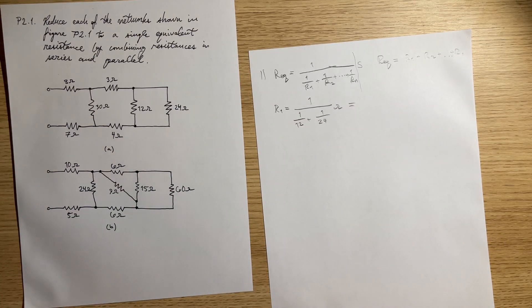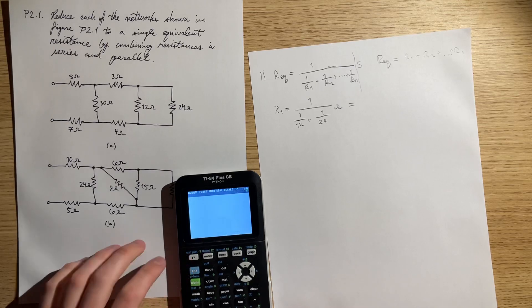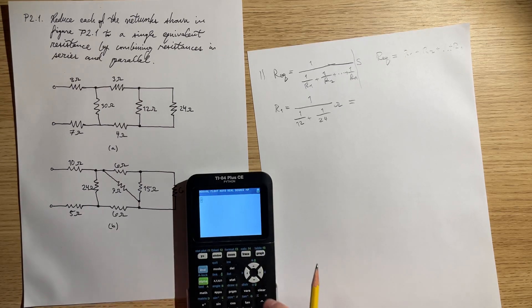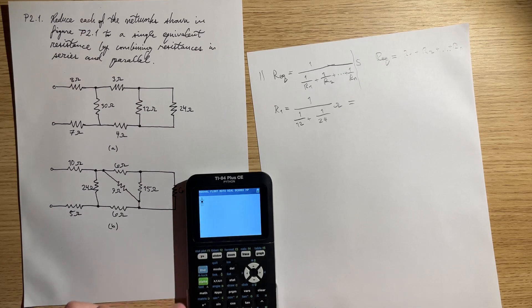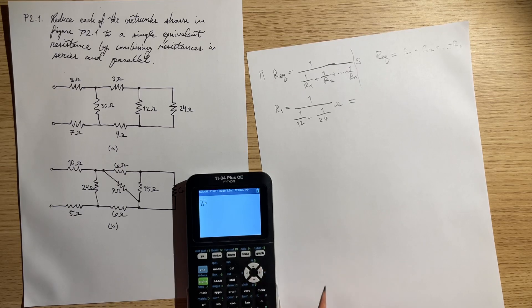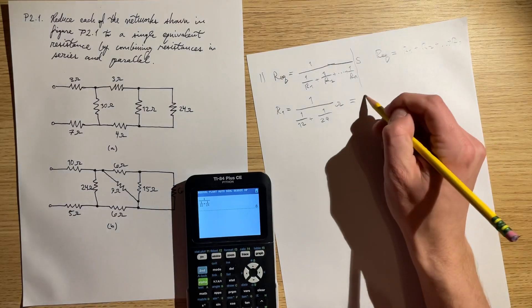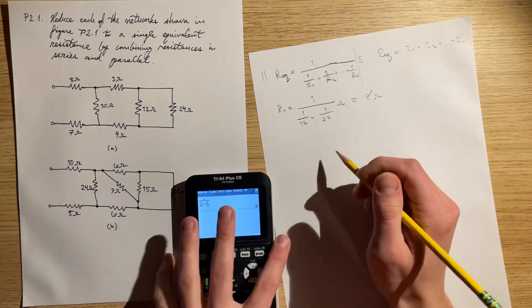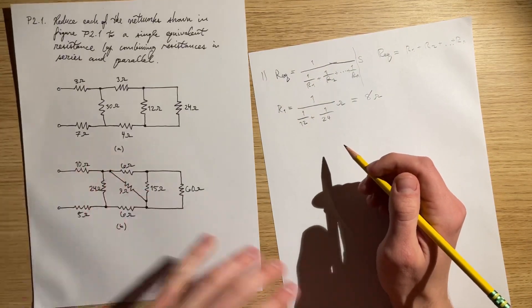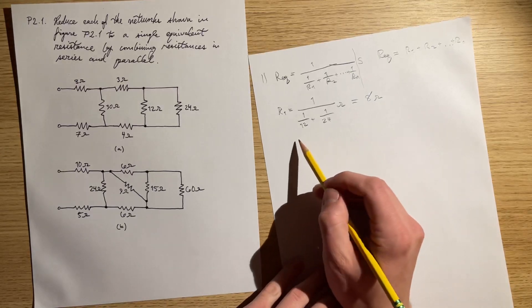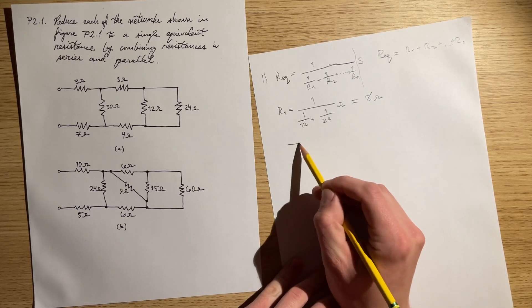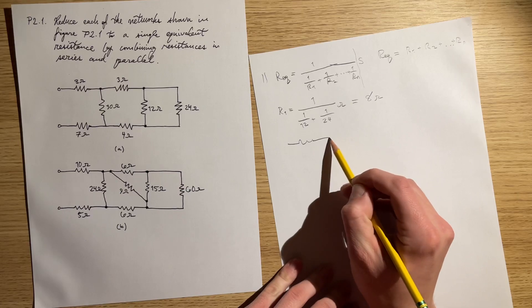1 over 12 and 1 over 24 ohms. So R1, if I get my calculator out, I'm just going to type that in: 1 over 12 plus 1 over 24. We get 8 ohms.